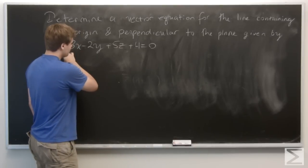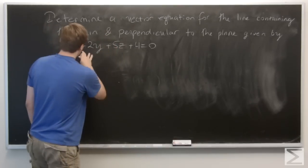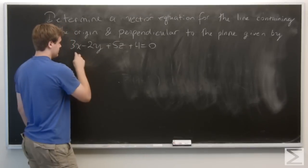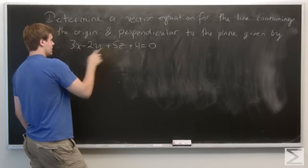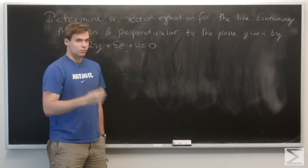Since we know it's perpendicular to this plane, and we know that the standard equation of the plane actually means that these three numbers, 3, minus 2, and 5, are actually the components of the normal vector of this plane.